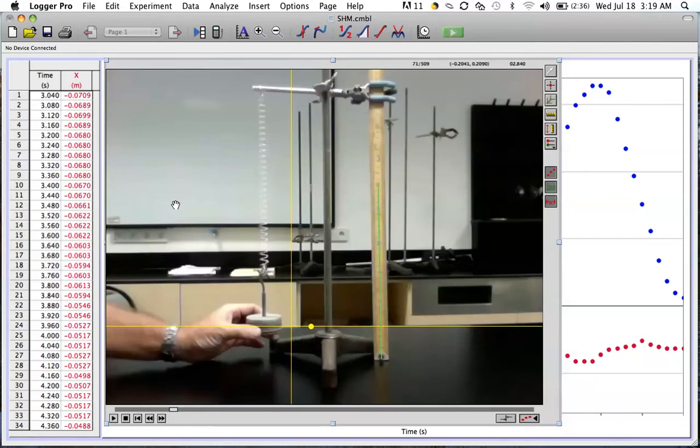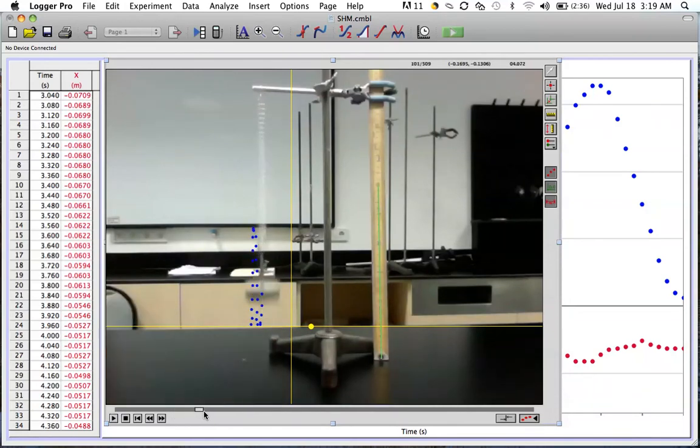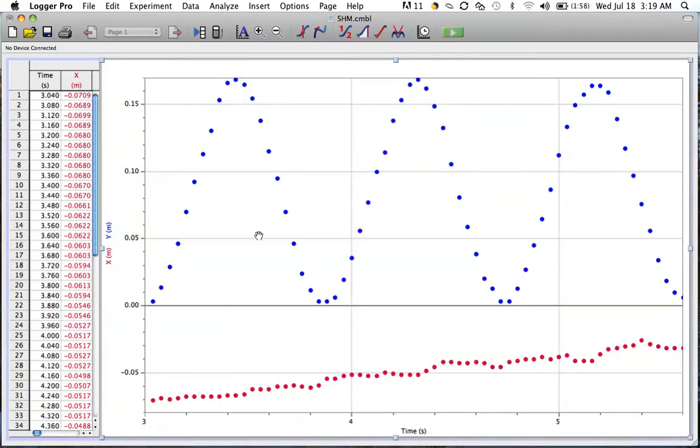What I've already done is I've videotaped a mass oscillating on a spring, and I've used the Logger Pro software to plot its position as time was going along. Logger Pro automatically plots the position of the object in the y-axis with time and also its position along the x-axis with time.